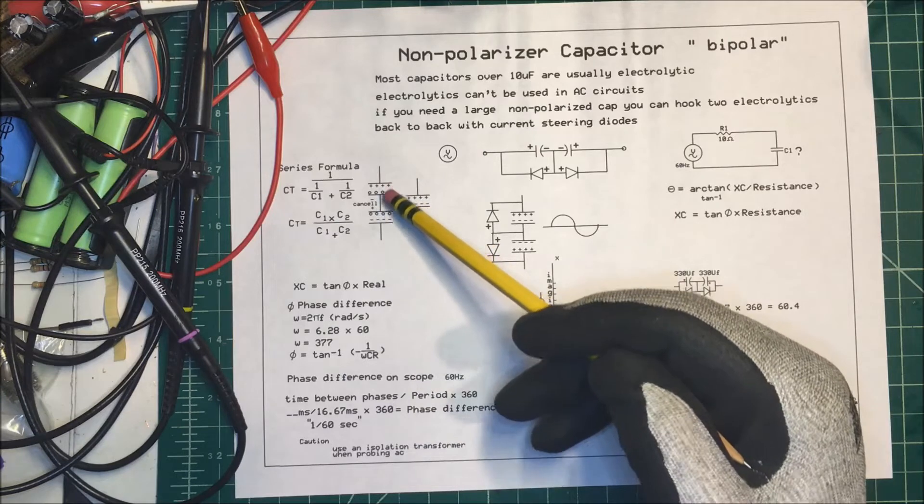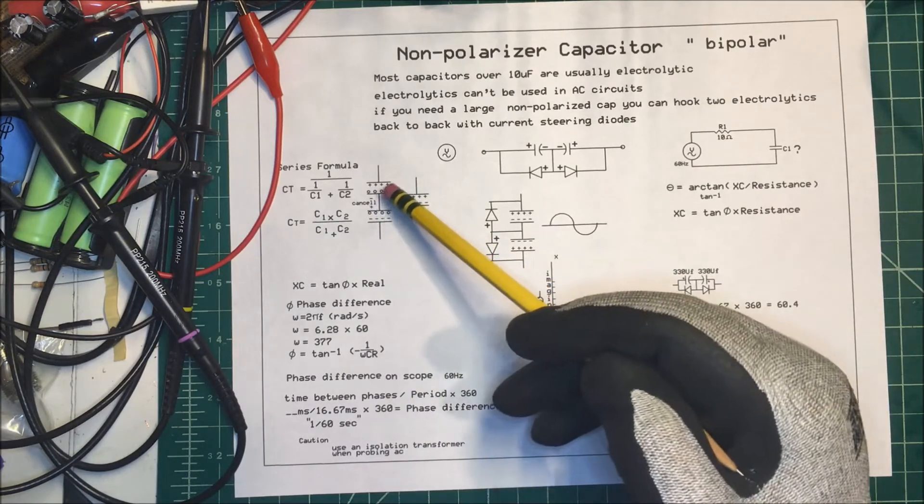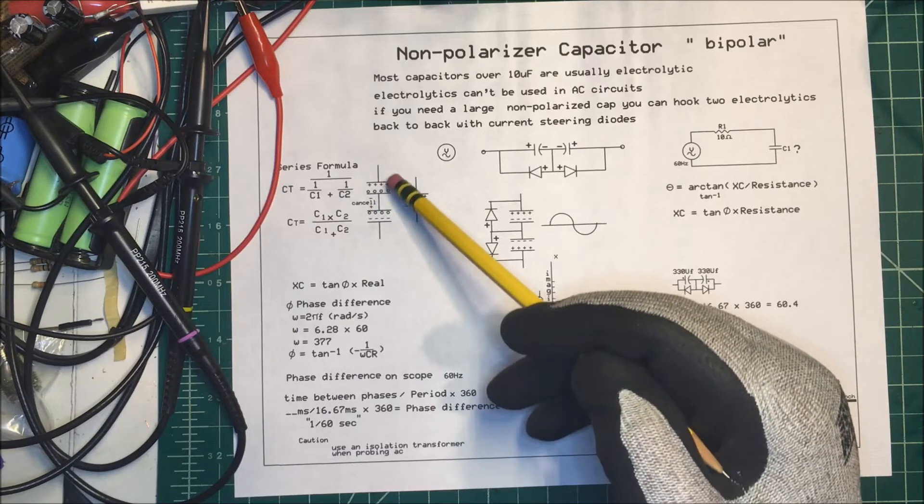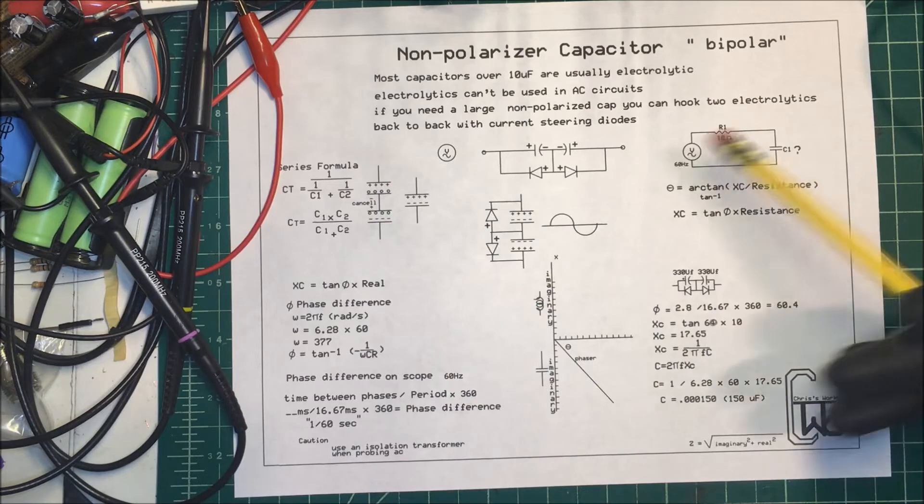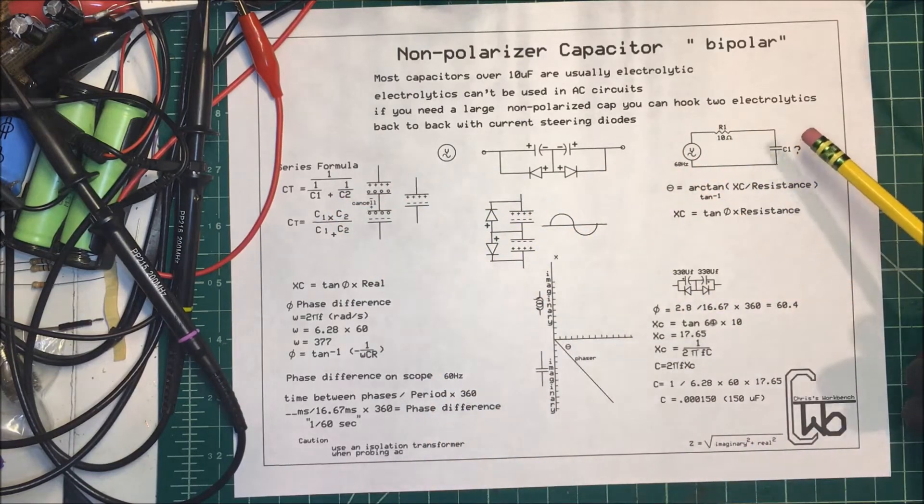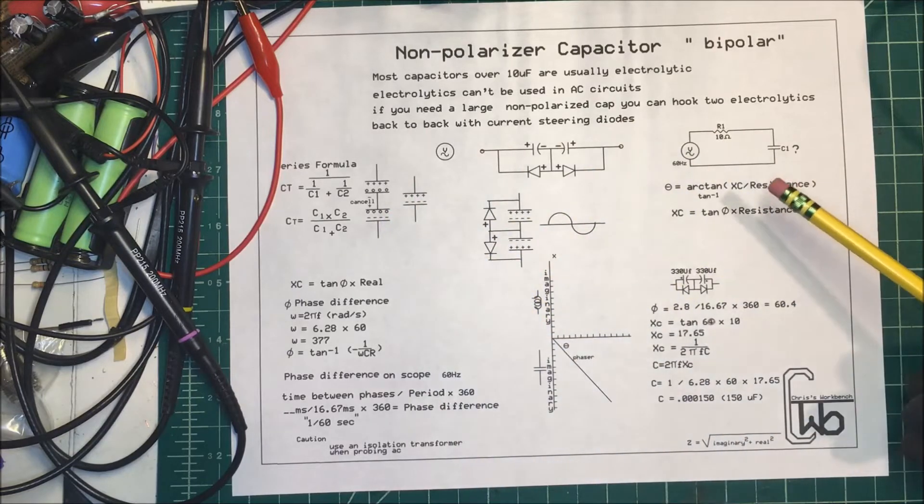These two center plates will cancel each other out, because you have positive, negative, positive, negative, so the negative and the positive cancel, and these two plates are basically further apart, so your capacitance is reduced, but you're dropping voltage across each one, so you can increase your voltage that way.